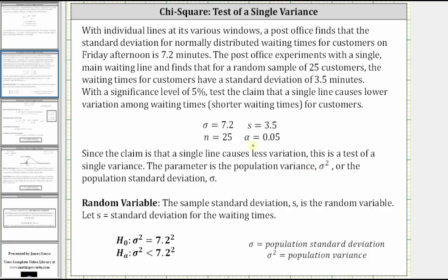Because the claim is a single line causes less variation, the alternative hypothesis is the population variance is less than the square of 7.2. Notice how we are squaring 7.2 here because we are given sigma equals 7.2. So if we square sigma, we must also square 7.2. And then it follows the null hypothesis is the population variance equals the square of 7.2.